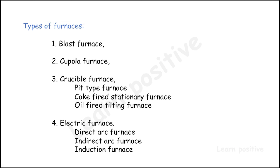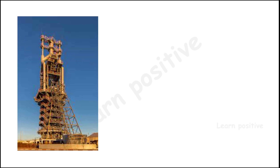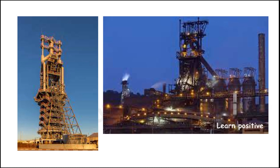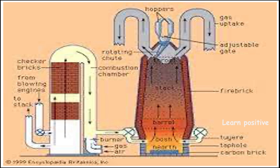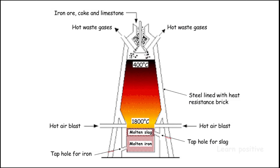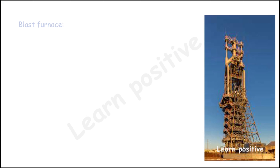Today we are going to see about the blast furnace. This is the image of the blast furnace — it is the plant setup. You can see the blast furnace at the center, and on the right side there are three cylinders that create hot gas, which is supplied into the furnace to melt the iron ore. This is the schematic diagram showing how the furnace works.